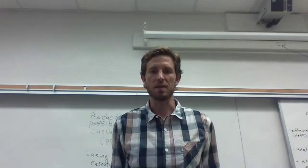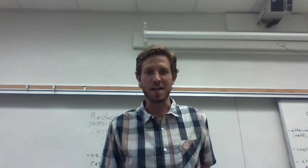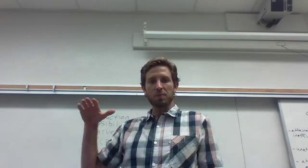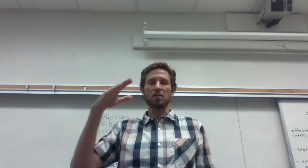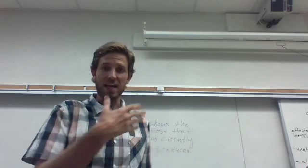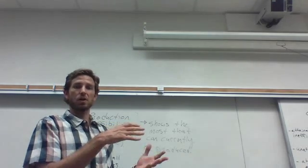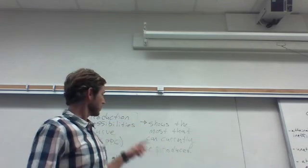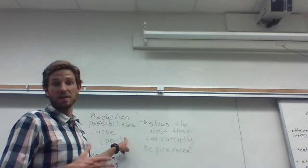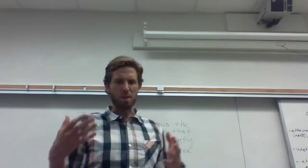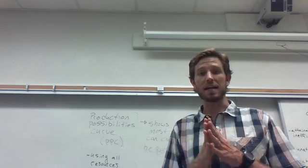To begin, you want to keep in mind that the production possibilities curve is a model related to production. This production possibilities curve is going to show you the limit of what a country can produce. Because nations have scarce resources, they can't keep producing more and more goods. There's a finite amount of production that can occur at any one point in time. The production possibilities curve, or the PPC, is going to show you where that limit is. The key thing to keep in mind is that you're talking about production. You don't yet want to be thinking about demand or prices of the good or anything like that.